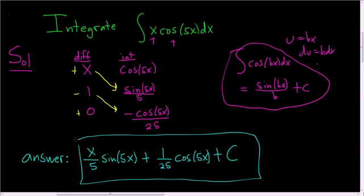So that's a pretty simple example of tabular. So to recap, you pick something that after repeated differentiation is 0. That's something in this case is x. And then whatever is left, you have to integrate it. And ideally, it's something that you can integrate. So cosine is something that we can integrate. So I hope that made sense.